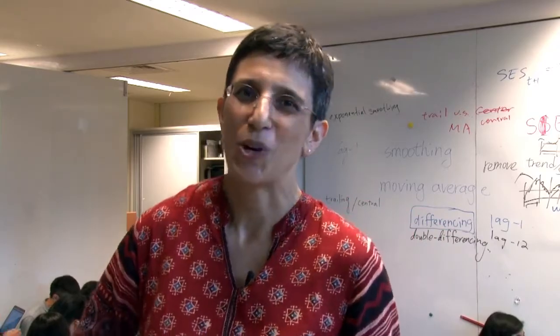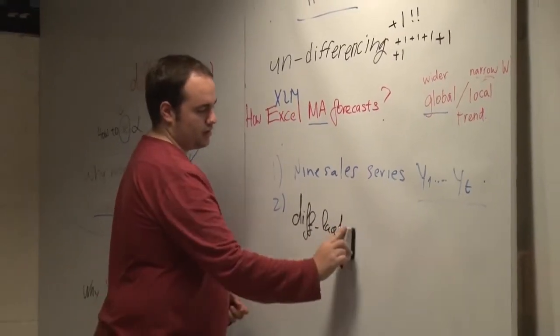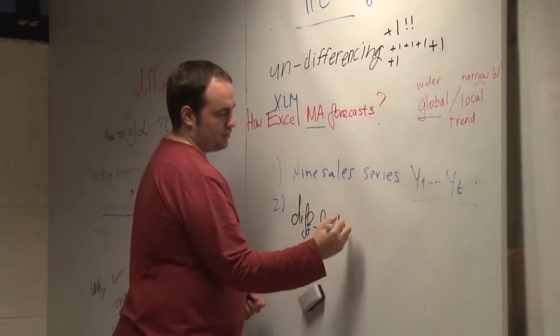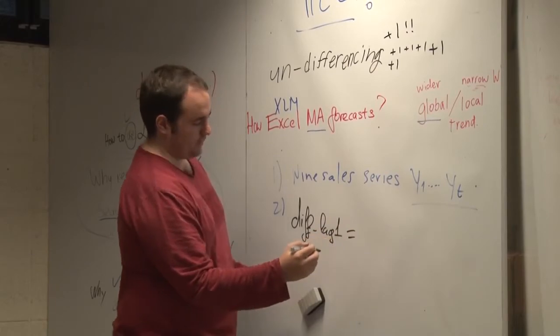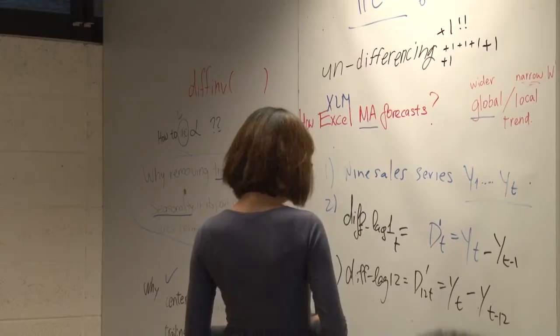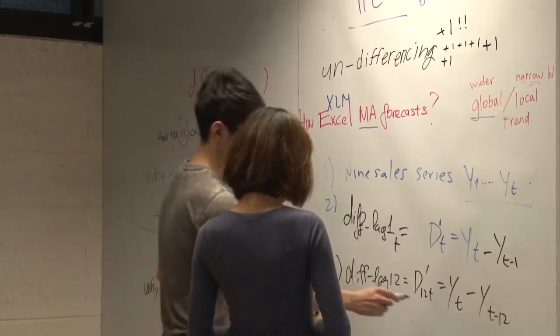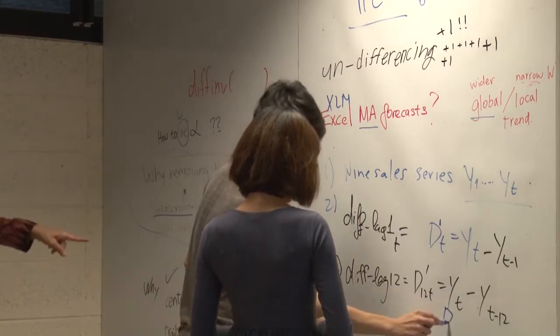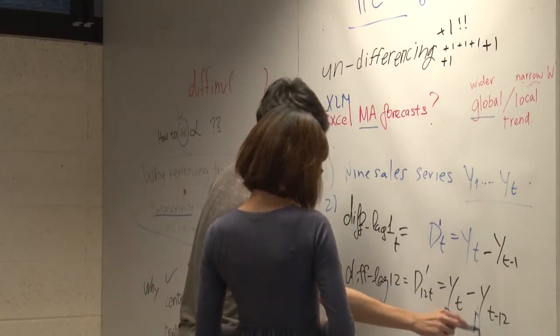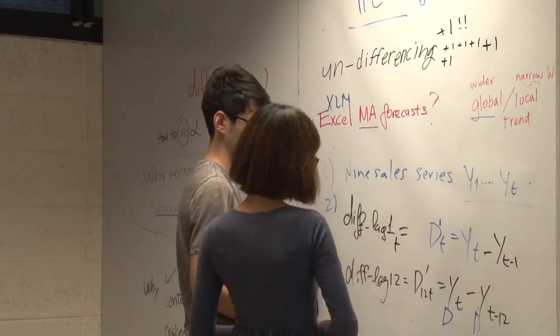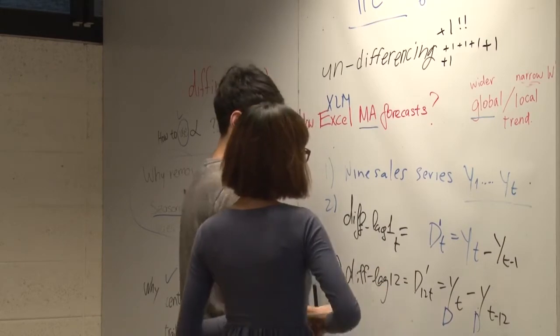One very special thing about the flipped classroom that I use is that, as you can see in this classroom, we don't have any tables and we don't have any chairs. What we have is lots of whiteboards and places to hang out in teams as it feels most comfortable. This is much more natural for a problem-solving type of class, even when it has to do with analytics, laptops, and technical topics.